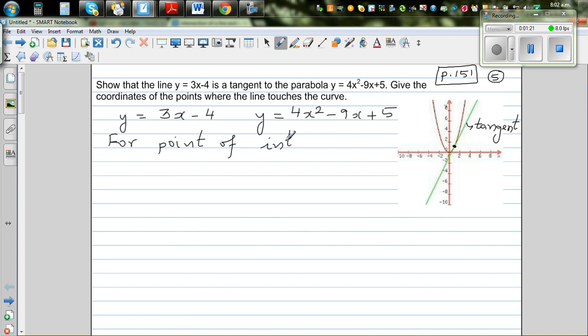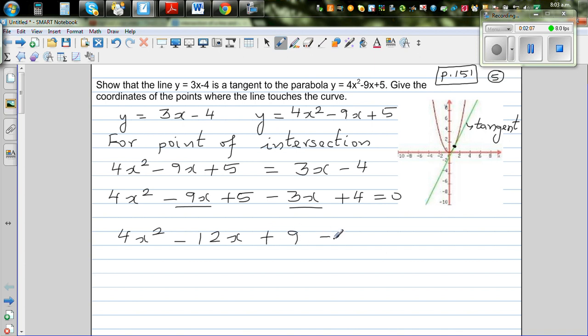At the point of intersection, your x coordinate and your y coordinate are going to be equal. We can say 4x squared minus 9x plus 5 equals 3x minus 4. Now I want to make it a quadratic equation. This is 4x squared minus 9x plus 5, take away 3x plus 4 equals 0. Just simplifying further, this is 4x squared, minus 9x minus 3x is minus 12x, and 5 plus 4 is 9, equals 0.